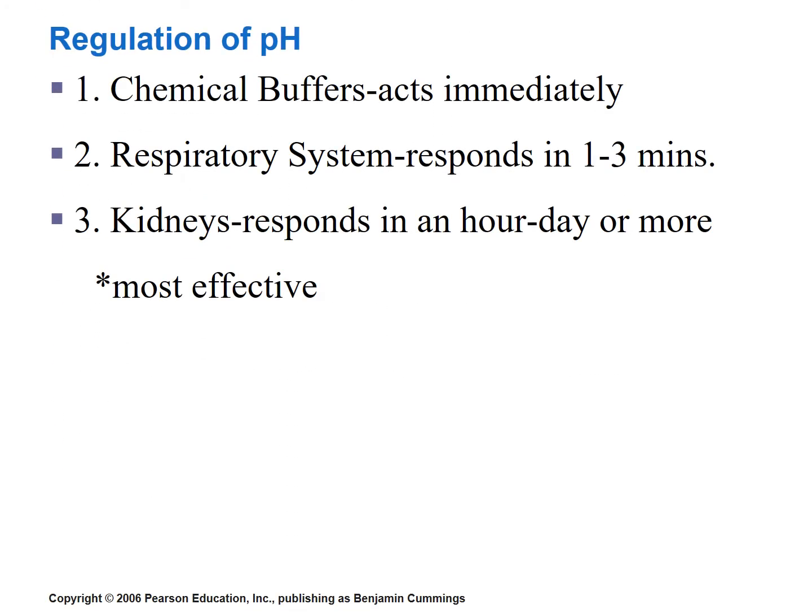In the previous screencast, we identified three mechanisms the human body has for regulating pH: chemical buffers, the respiratory system, and the kidneys of the urinary system. We considered the chemical buffers in the previous screencast, so let us now turn our attention to the remaining mechanisms — the respiratory system and the kidneys. We will start with the respiratory system.